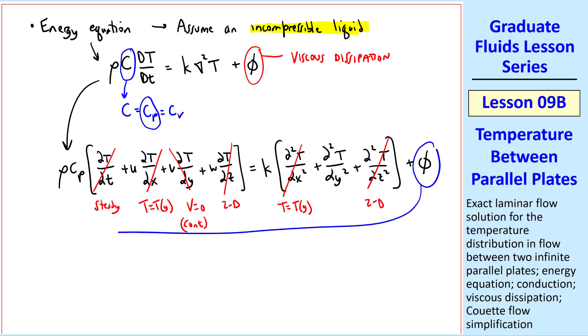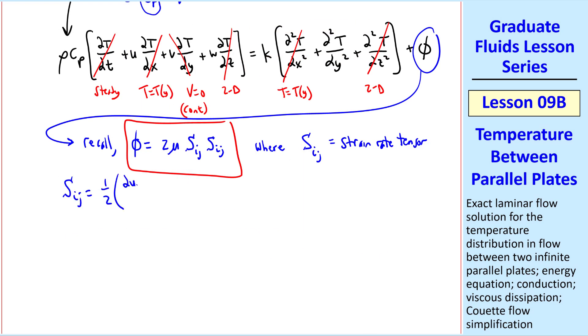Now let's consider the viscous dissipation. You may recall from a previous lesson that phi equal 2mu capital Sij capital Sij for incompressible flow, where Sij is the strain rate tensor, which we defined as 1 half del ui del xj plus del uj del xi. When you apply some of these same reasons here, such as v being zero, w being zero, and the flow being 2D, this tensor ends up having only two non-zero components, as I write out here, and only one unique one, since these two are the same.